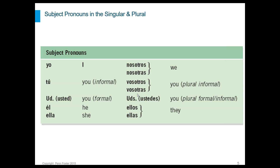We'll start with the subject pronouns, singular and plural. Subject pronouns exist in Spanish just as they do in English — I, you, he, she, we, you, and they all represent a pronoun, replacing a main noun. In Spanish, you can see the equivalences in this chart: Yo means I, tú means you in the informal sense, usted is you in the formal sense, él means he, and ella means she.